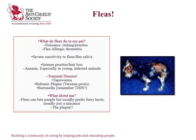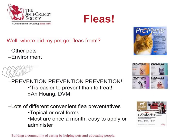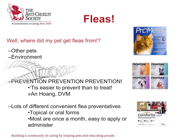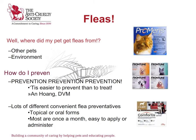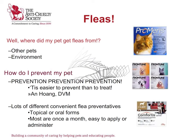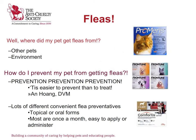If your pet has fleas and goes untreated, it can cause hair loss, severe itching and scratching, and anemia. Pets get fleas from their environment and other animals. To prevent your animal from getting fleas, you should use a flea preventative. There are topical and oral forms of flea preventatives, but the most commonly used are the monthly treatments.